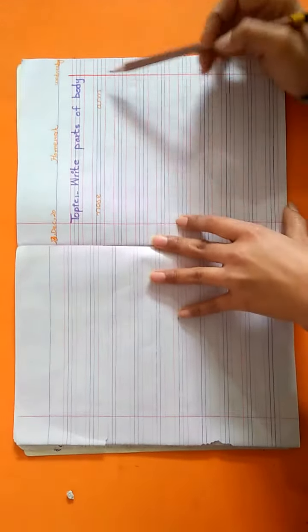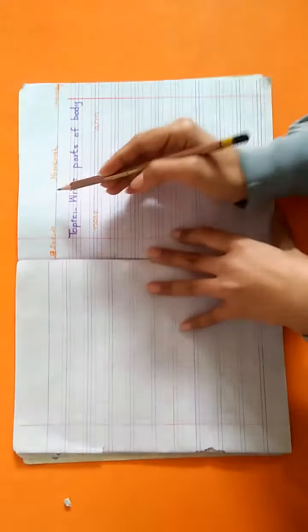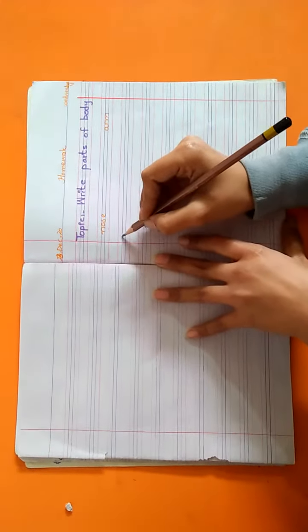Nose mean nag, arm mean baju. Now we write on flow lines like this.